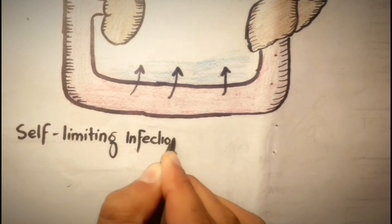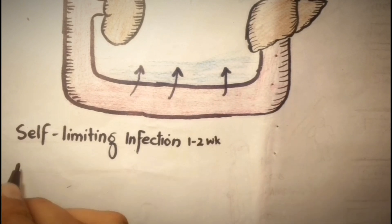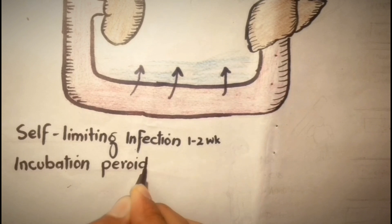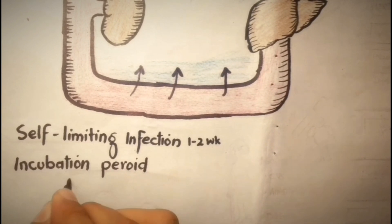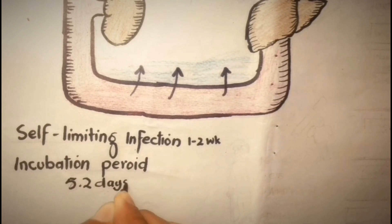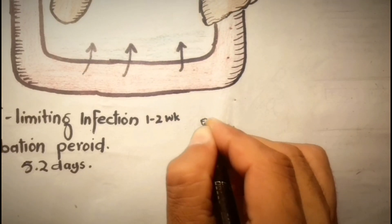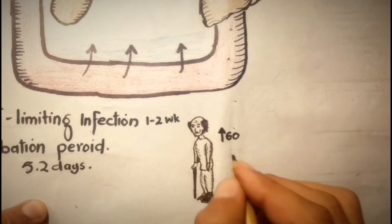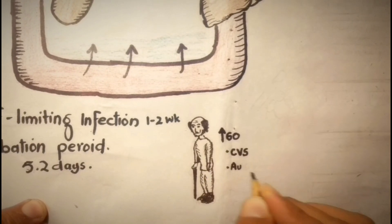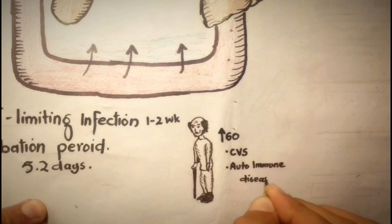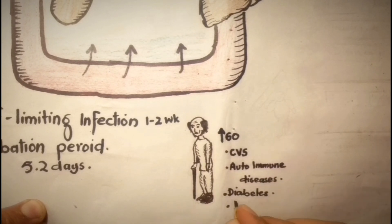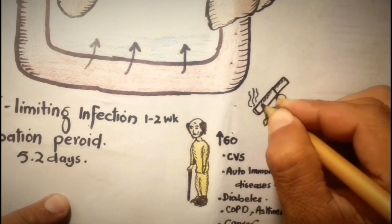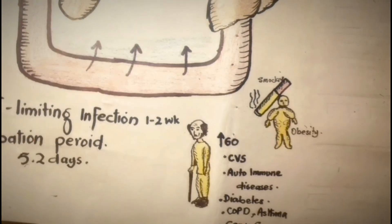The incubation period — the time between virus entry and appearance of symptoms — is approximately 5.2 days for this virus. This infection is more dangerous for high-risk patients, that is those above 60 years of age and those with cardiovascular diseases, autoimmune diseases, diabetes, chronic respiratory diseases like COPD and asthma, and cancer. Smoking and obesity are also susceptibility factors.